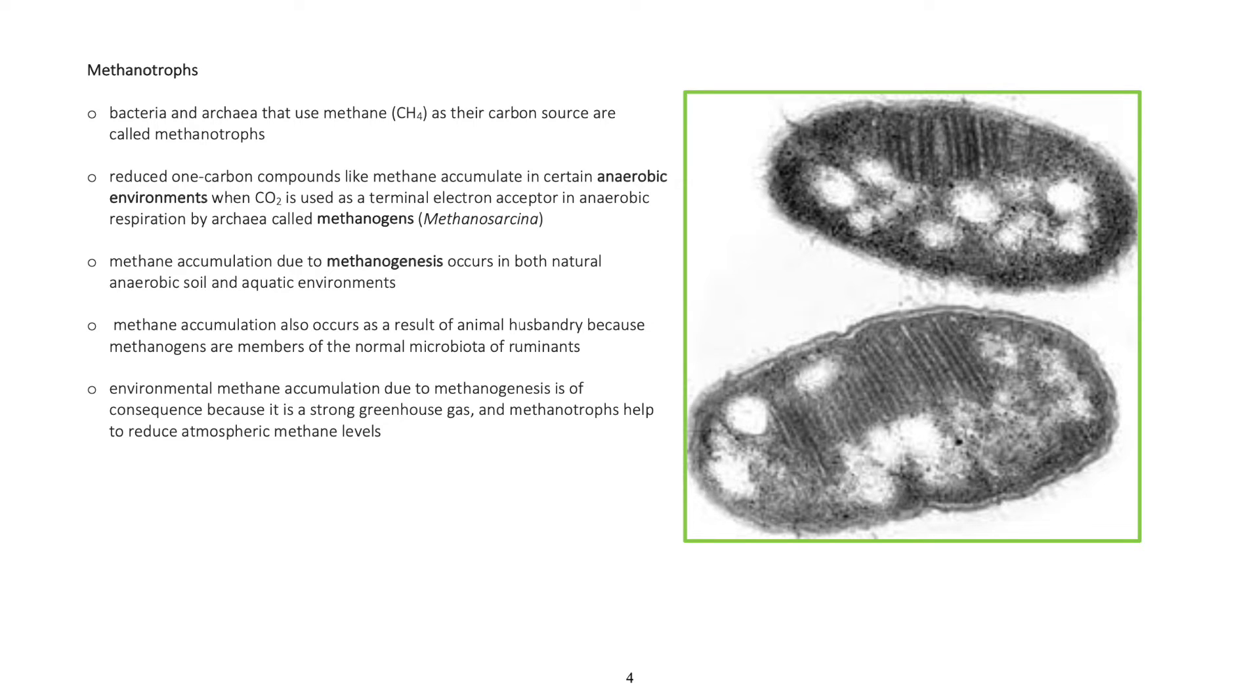Environmental methane accumulation due to methanogenesis is of consequence because it is a strong greenhouse gas and methanotrophs help to reduce atmospheric methane levels.